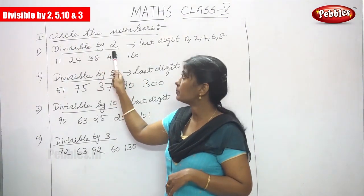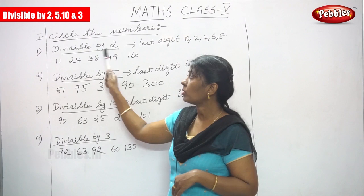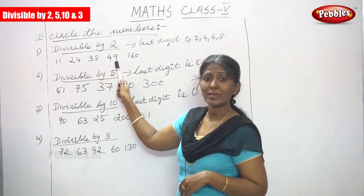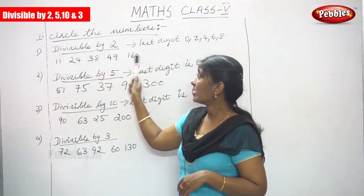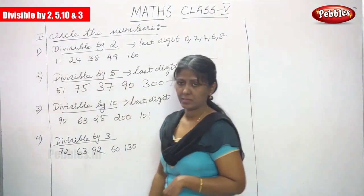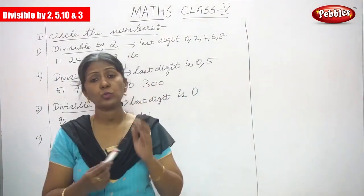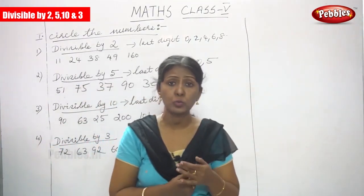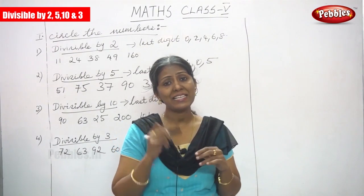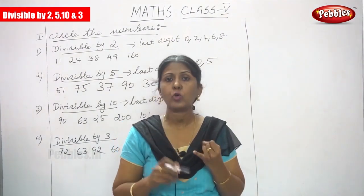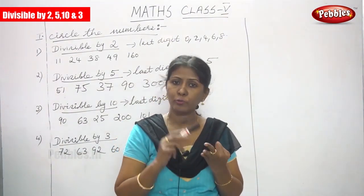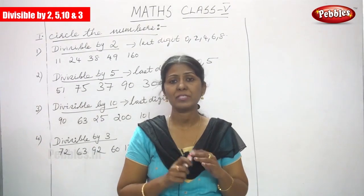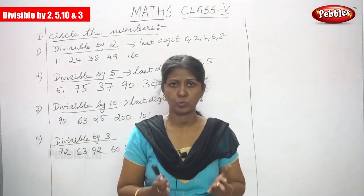The question is divisible by 2. What is the rule of divisible by 2? If the last digit ends with 0, 2, 4, 6, or 8, the number is divisible by 2.